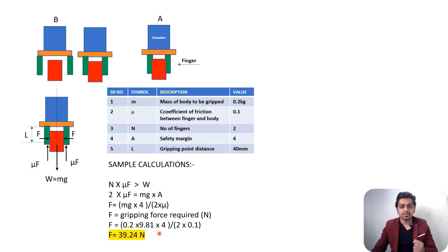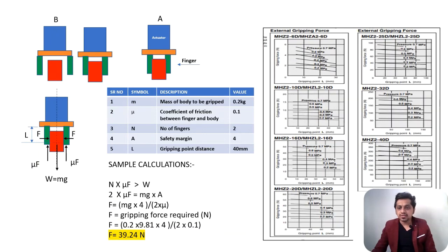You can see these are the different graphs with the gripping point, the length of the gripper, and the gripping force. The gripping force will not be constant - it will vary with the gripping distance, and that's why gripping distance plays an important role. If you observe this graph, as the gripping point distance increases, your gripping force reduces. That's an important consideration.